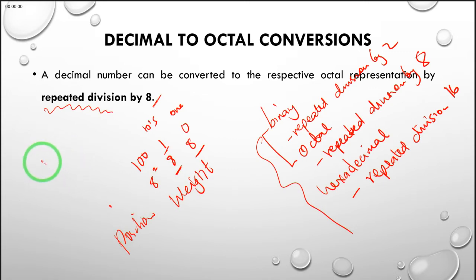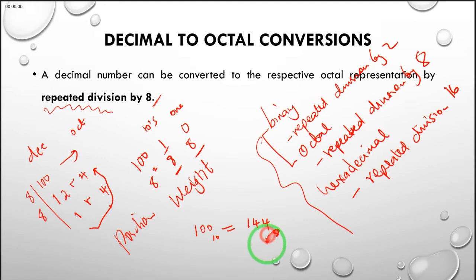For instance, if we are converting from decimal 100 to octal, you can divide by 8. The first answer is 12 remainder 4. 12 divided by 8 is 1 remainder 4. So if you obtain 100 which is in base 10, its equivalent in octal is 144 in base 8.